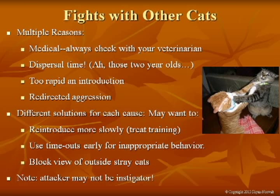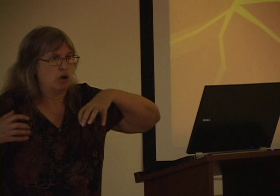You also get fighting from too rapid an introduction — it's not a two-week process, it can be two years. And then there's redirected aggression: if neighbor cats come around and stare in your windows or scent-mark your property, your indoor cat gets agitated and aroused but can't get to the outside cat, so it attacks the nearest cat inside. Poor Smitty freaks out, and you get into a whole cycle of attack and retreat that you have to untrain. Different solutions for each cause.